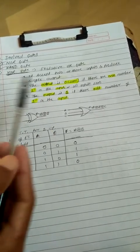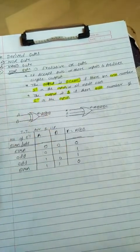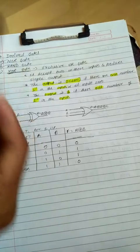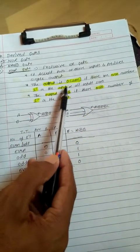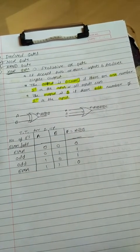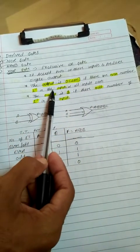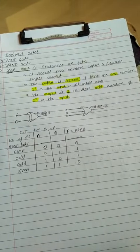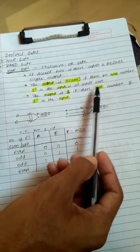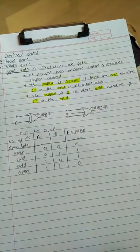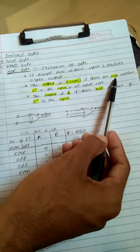The output of the XOR gate is zero if there are even number of 1s in the input, or if all inputs are zero. The output of the XOR gate is one if there are odd number of 1s in the input. So in the input, we take zero and one. If one appears an odd number of times, output is one. If one appears an even number of times, output becomes zero.